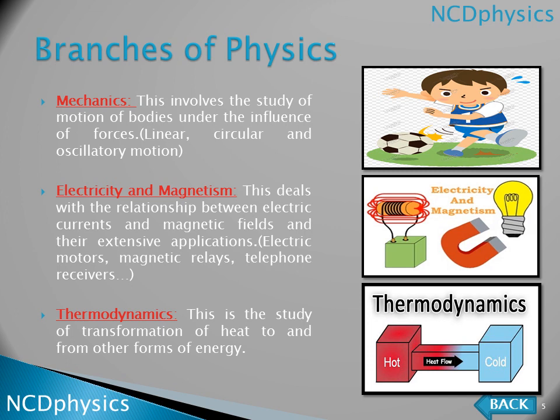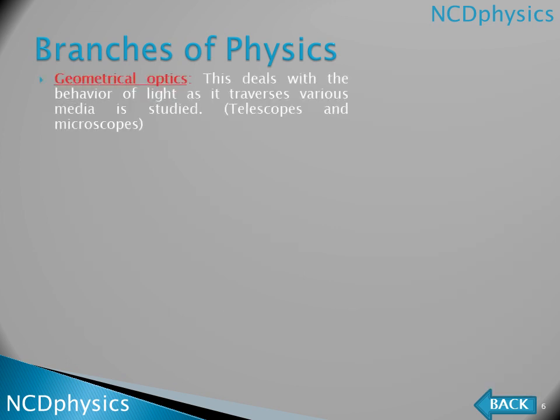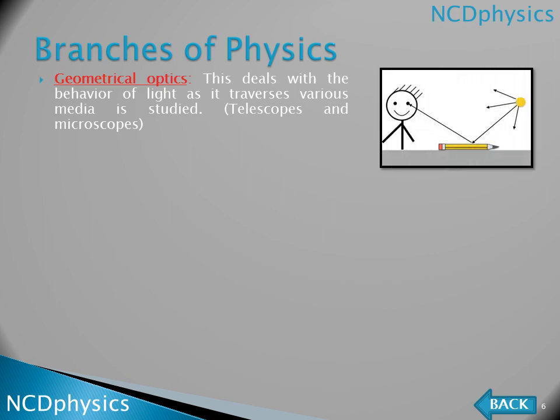The next branch is geometrical optics. This deals with the behavior of light as it travels through various media. For example, sunlight hits a pen, reflects from the pen and enters our eye, allowing us to see the object. We study what reflection is and how light travels through different media, using instruments like telescopes and microscopes.